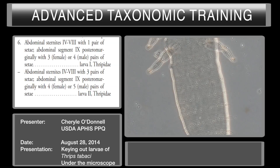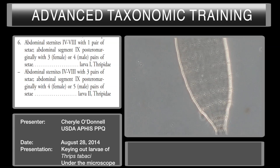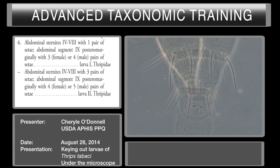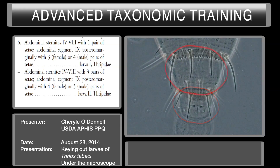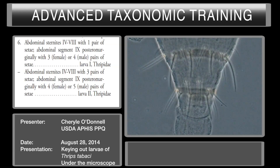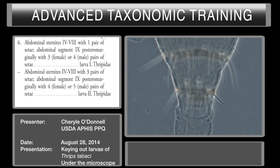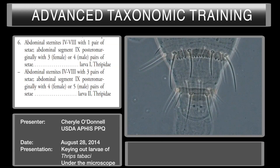Let's check abdominal segment nine, post-marginally with four or five pairs of CD. Segment ten is here and segment nine is here. Counting on the dorsal side and then focusing toward the ventral side, we get four CD total on that sternite. Our answer is that this is a larval stage two of the Thripidae family. We now go to the key to the second instar larvae of Thripidae of the Western Palearctic.